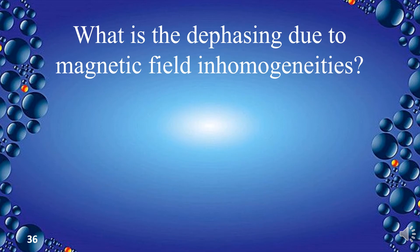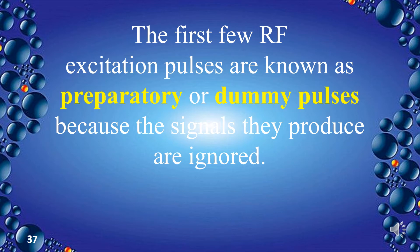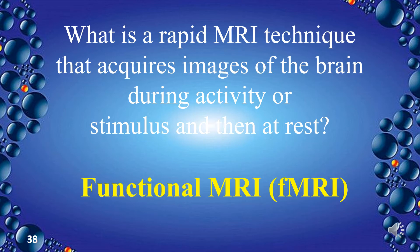What is the dephasing due to magnetic field inhomogeneities? It is called T2 star (T2*), not T2. The first few RF excitation pulses are known as preparatory or dummy pulses because the signals they produce are ignored. What is a rapid MRI technique that acquires images of the brain during activity or stimulus and then at rest? That is functional MRI (fMRI).